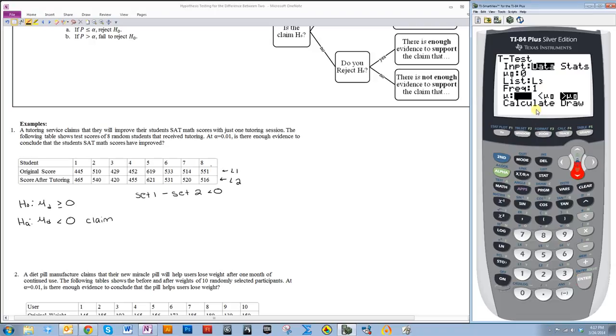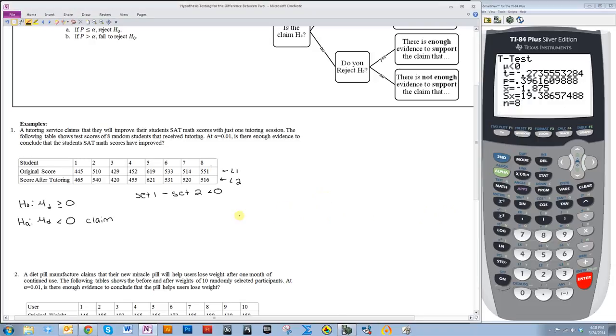Then I need to highlight the sign from the alternative hypothesis, so in this case it was less than. And then I highlight calculate, press enter. When you highlighted this, you need to make sure after you highlight it you press enter, then you highlight calculate and press enter.